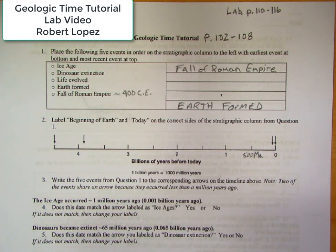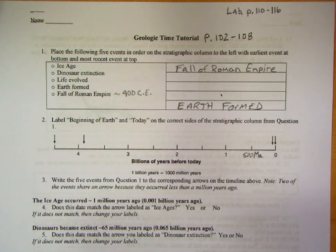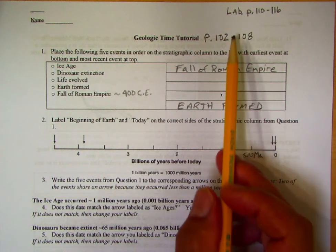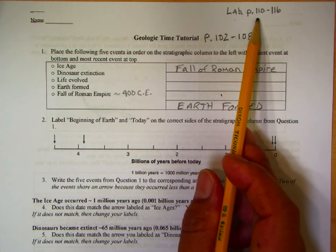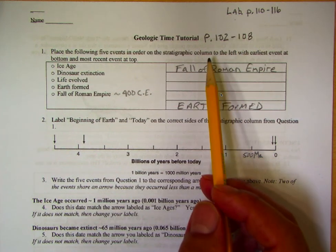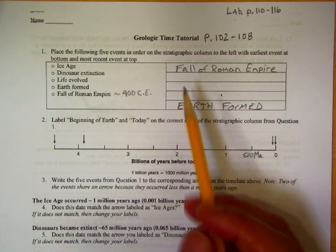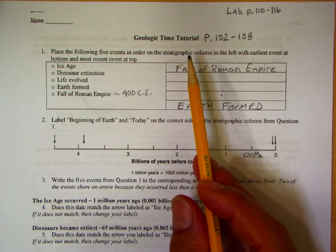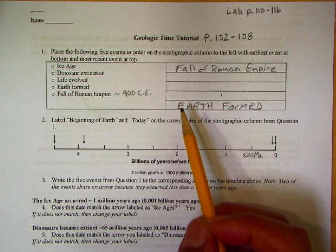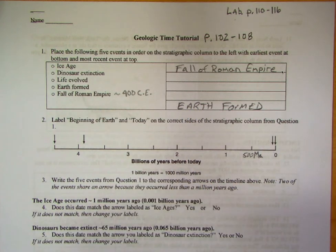Hello and welcome back to physical geology lab videos. Today I want to cover the geologic time tutorial, which covers pages 102 to 108. In a second video I'll cover the geologic lab on pages 110 to 116. For this first part you're labeling relative time events or sequence of events. We always put the oldest unit on the bottom and the youngest unit on top.